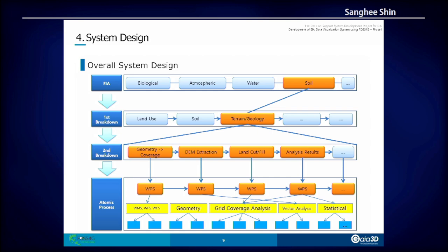In terms of EIA, there are biological, atmospheric, water, and soil categories — 21 items in total covered during the EIA process. These break down into smaller items such as land use, soil, terrain, and geology, which further break down into geometry and DEM. At the bottom of the system design, we can see atomic processes and atomic analytical functions, making use of WPS and other OGC systems.